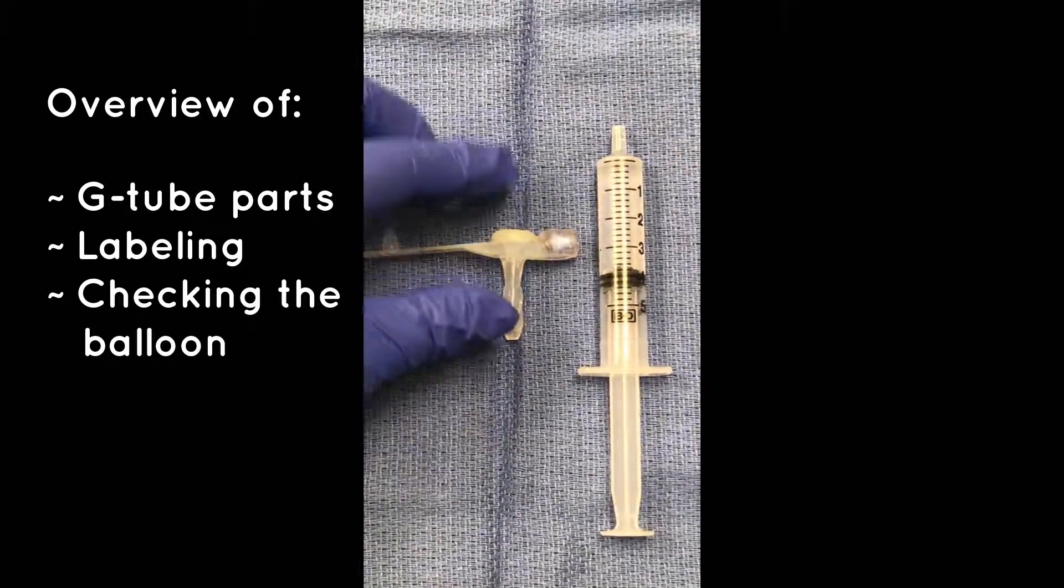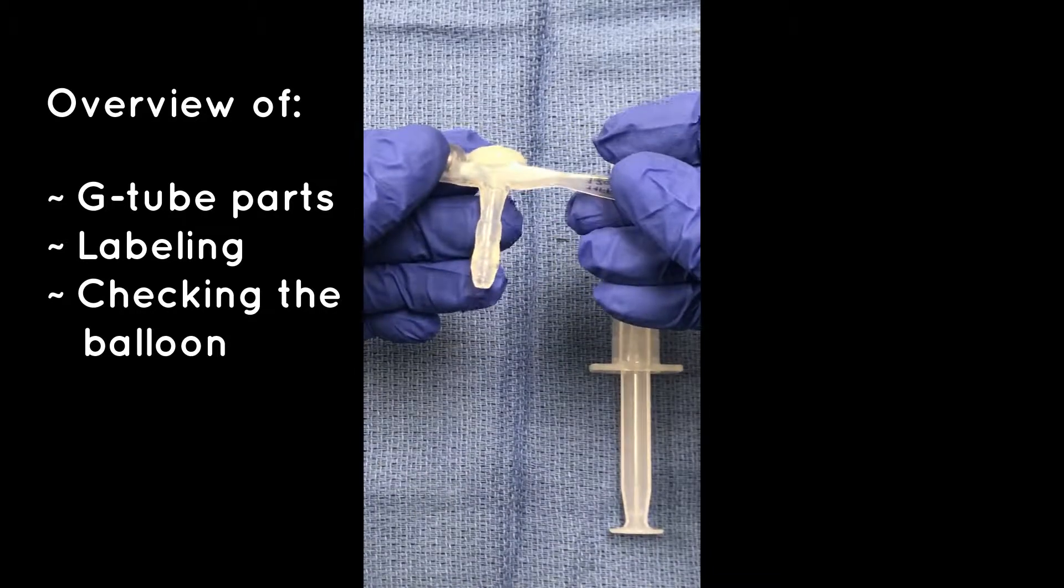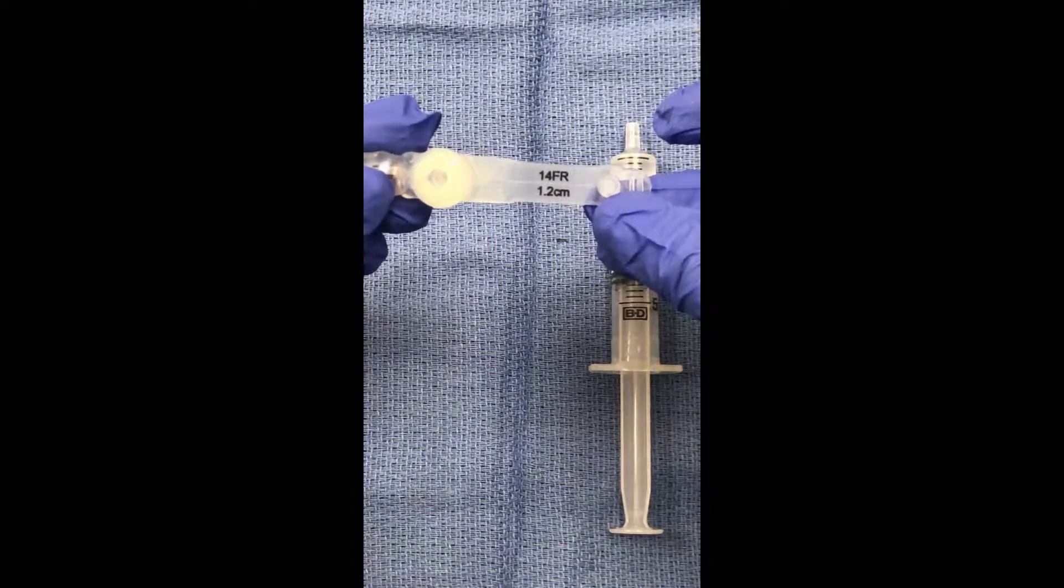Parts of a G-tube and how to inflate and deflate the balloon. First you'll notice on the silicone flap that there will be sizes for each G-tube.